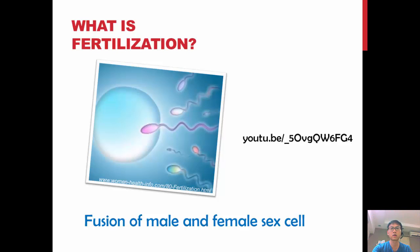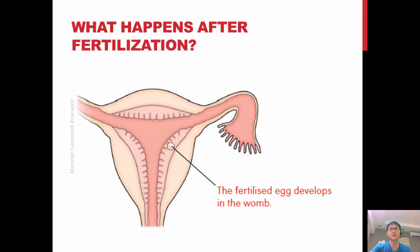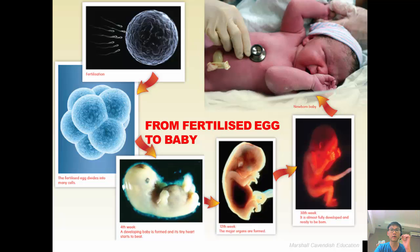Only when the egg is fertilized will it be able to grow into a new human being. To find out more about the journey of how the sperm goes into the female, click on the link here or type it into your web browser. After fertilization, the fertilized egg will grow and develop in the womb. It will begin to divide into many cells to form the baby's tissues, organs, and systems — everything you see when the baby is born.